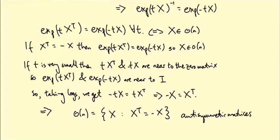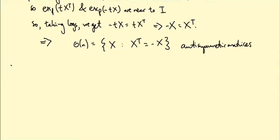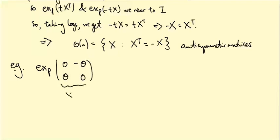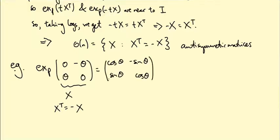Just to remind you, we already saw an example of this. When we took X equal to the matrix (0, -θ; θ, 0), that's an antisymmetric matrix — its transpose is minus X. And this gives exp(tX) equal to (cos θ, -sin θ; sin θ, cos θ), which is a two-dimensional rotation, so that's in the group O(2).